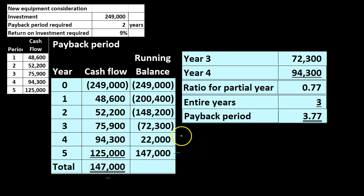In other words, we know it got paid off somewhere between year three and four, but we don't know exactly when. At the end of year three we owed $72,300, and we paid $94,300 in year four. Taking the $72,300 divided by the $94,300 gives us 0.77 — that's the partial year. Adding the original three years plus 0.77 gives us the payback period of 3.77 years.